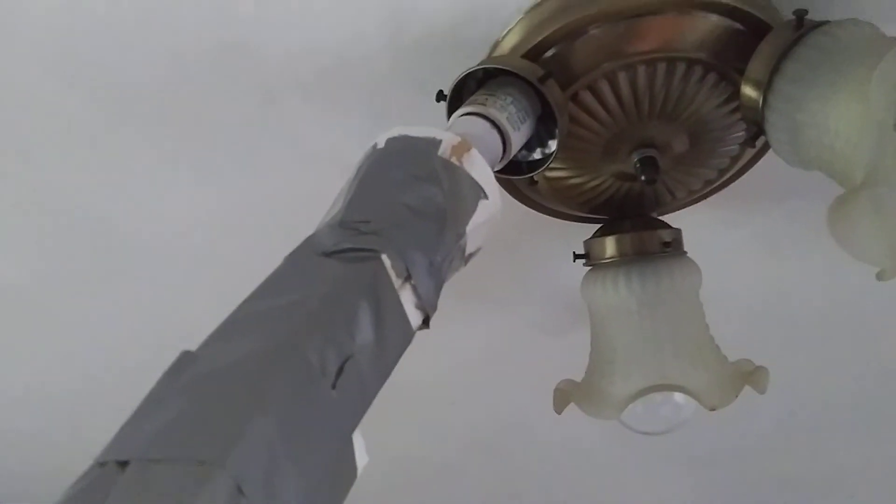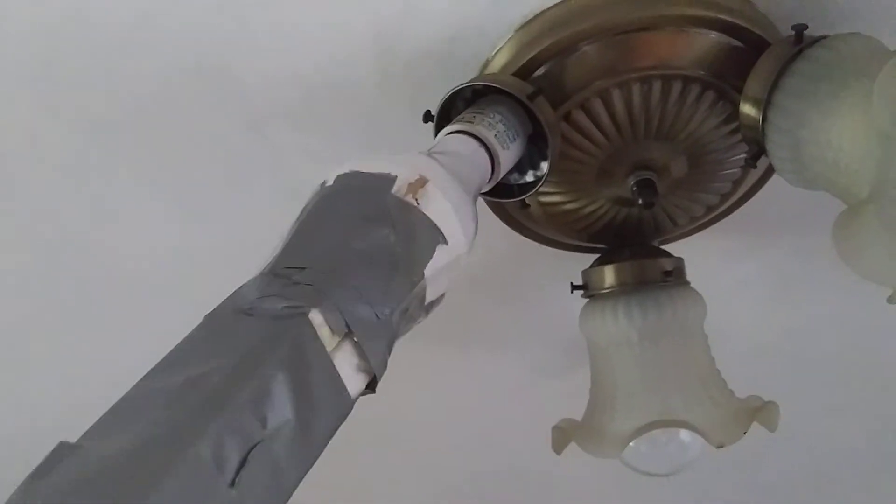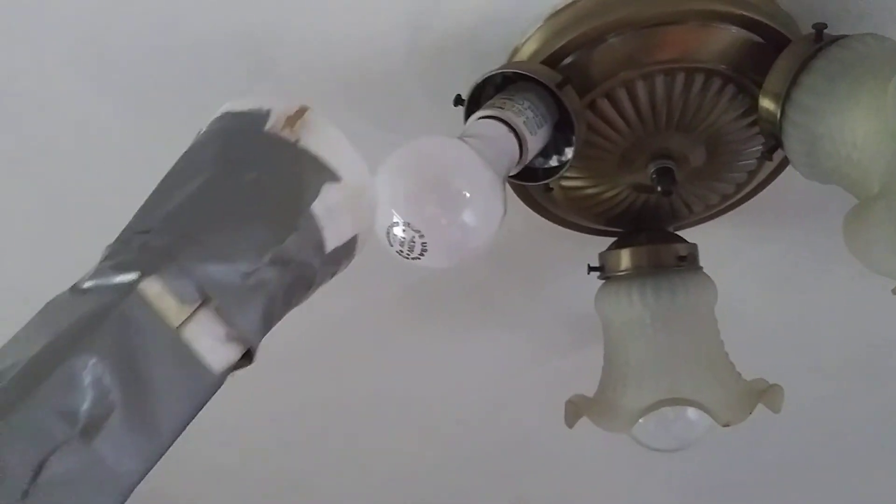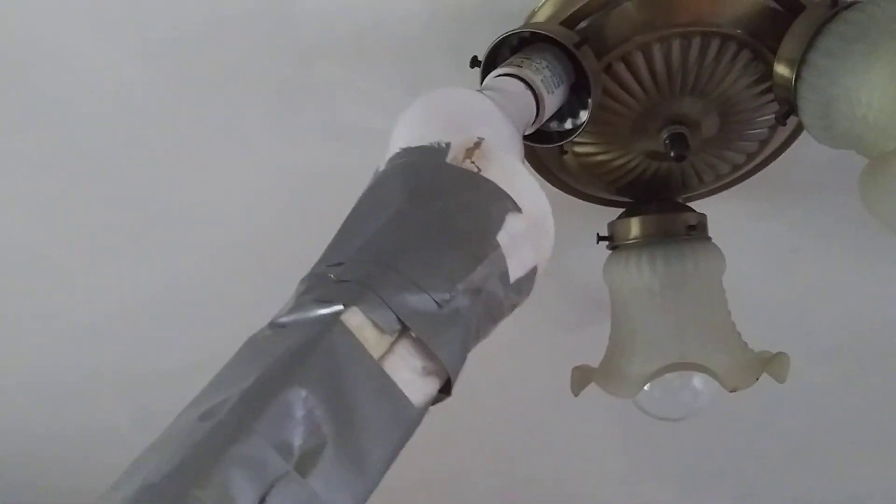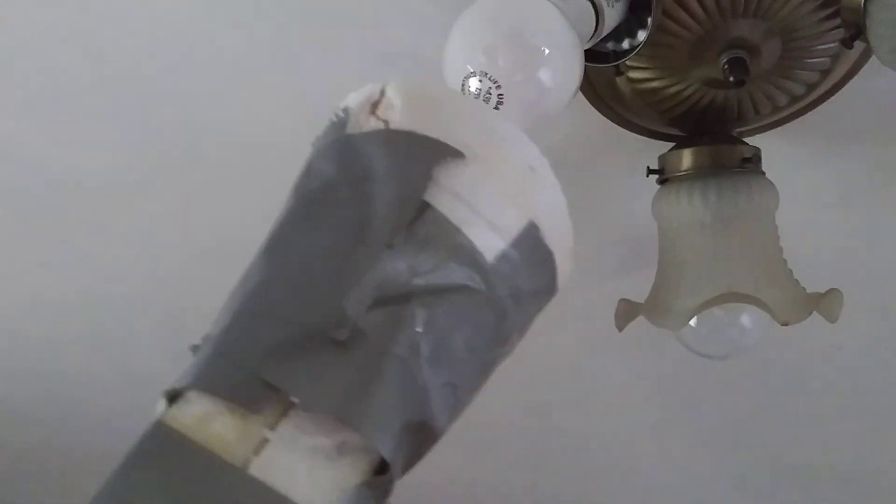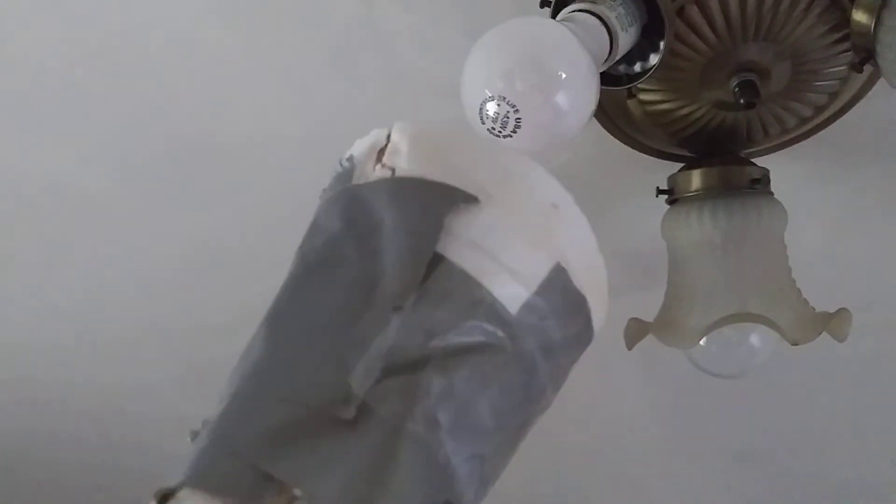There it is. Finished. The light bulb turner extension. Styrofoam, tape, and a cup. Styrofoam cup.